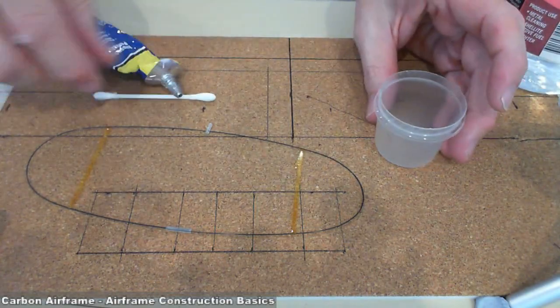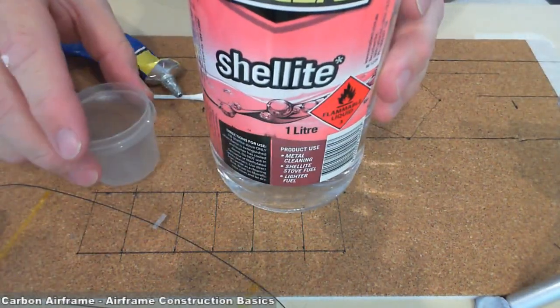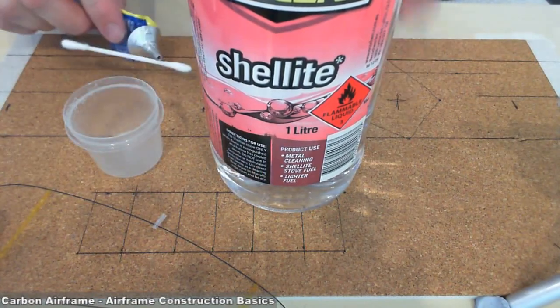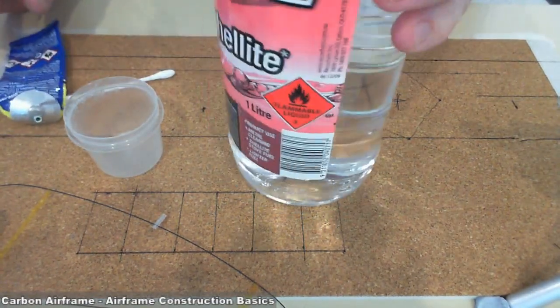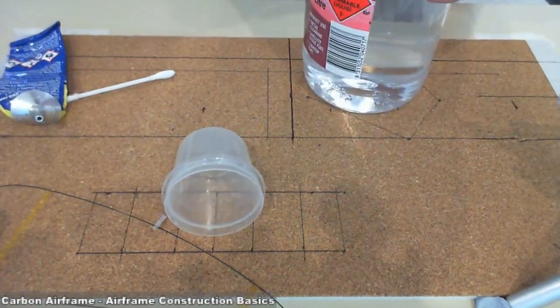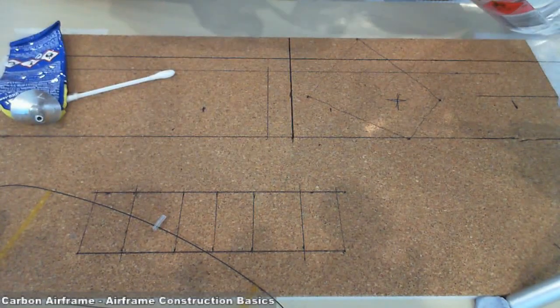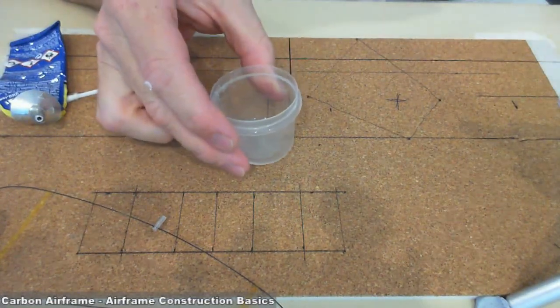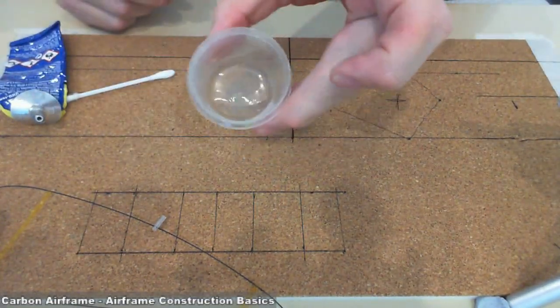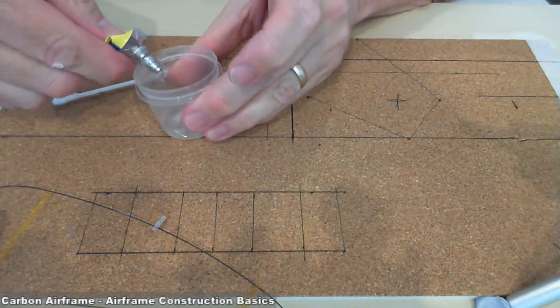So what we're going to do is mix it with shellite, which is what we call it here in Australia. It's basically lighter fuel. We're going to have a little mixing container and mix probably about 50-50. You can see how much I've got there, or even just a little bit more shellite.